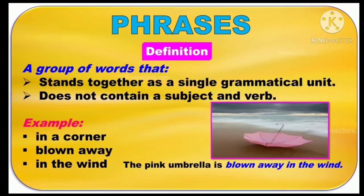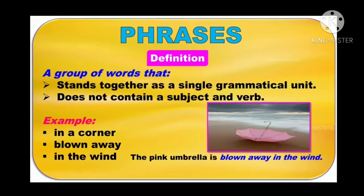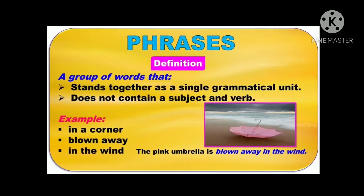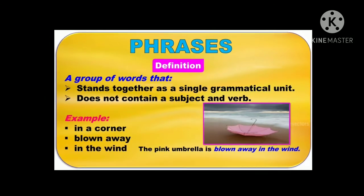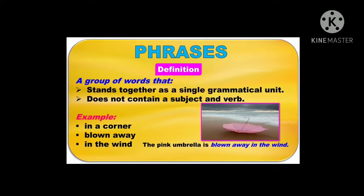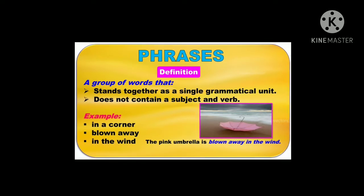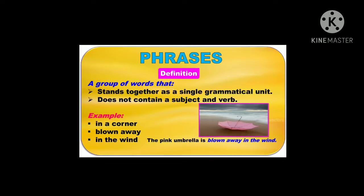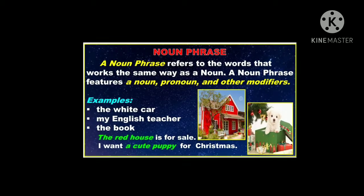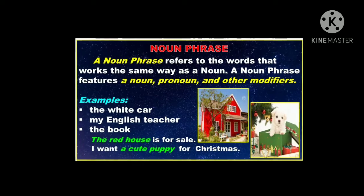Let's see phrases. What is a phrase? A phrase is a group of words that forms a meaningful unit, but it is not a complete sentence. In other words, it does not have a subject or a verb. Look at the examples: 'In a corner,' 'Blown away,' 'In the wind,' 'The pink umbrella is blown away in the wind.' There are several kinds of phrases in the English language. Let's see them one by one.